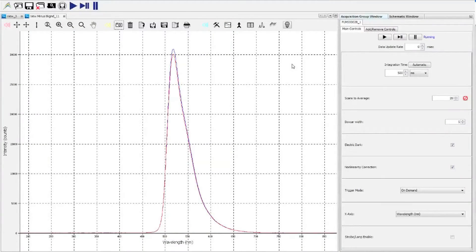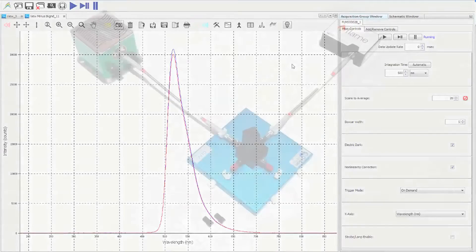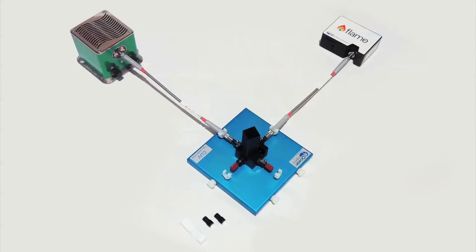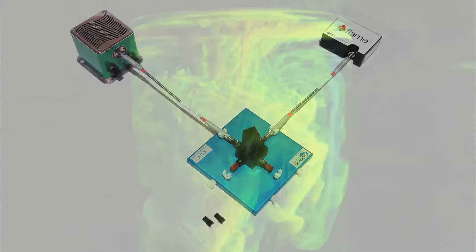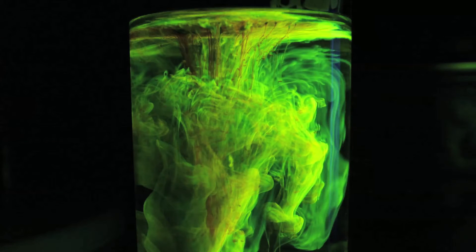In this video I'll demonstrate how to perform fluorescence measurements using Ocean Optics equipment and software. We will talk about the required equipment and setup and how to optimize your measurements for best results. In this video we will use fluorescein as our fluorescent sample.